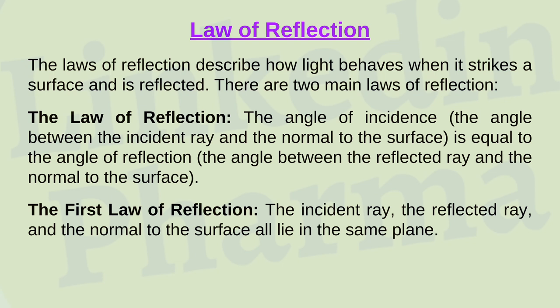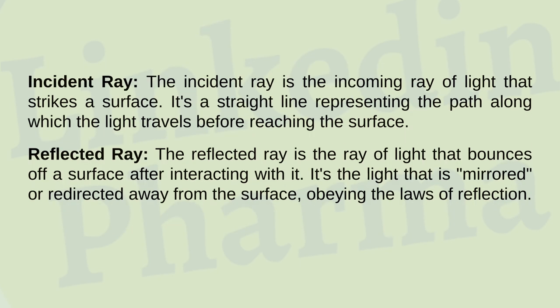Law of Reflection: the laws of reflection describe how light behaves when it strikes a surface and is reflected. There are two main laws. First, the angle of incidence — the angle between the incident ray and the normal to the surface — is equal to the angle of reflection — the angle between the reflected ray and the normal. The incident ray is the incoming ray of light that strikes a surface, traveling in a straight line before reaching it. The reflected ray is the ray of light that bounces off a surface after interacting with it, obeying the laws of reflection.